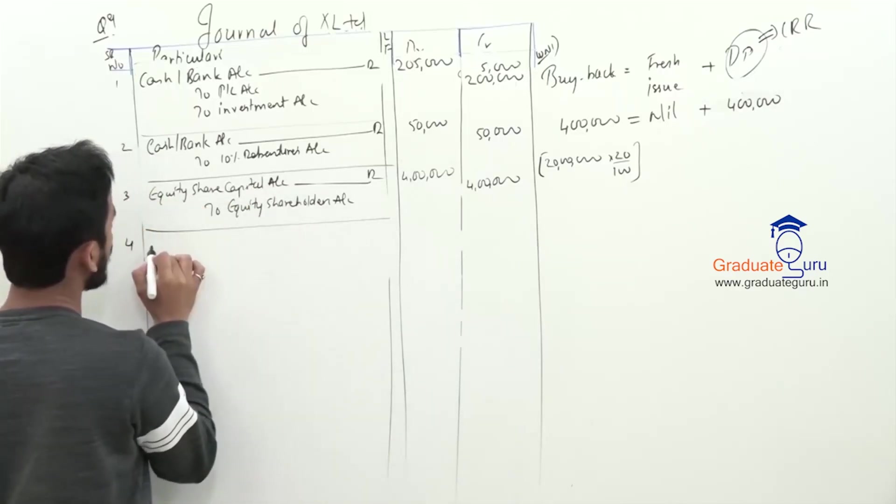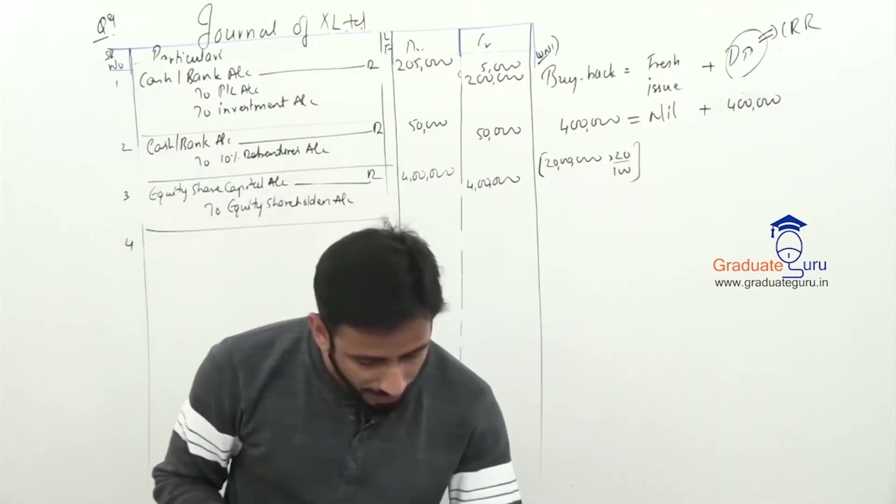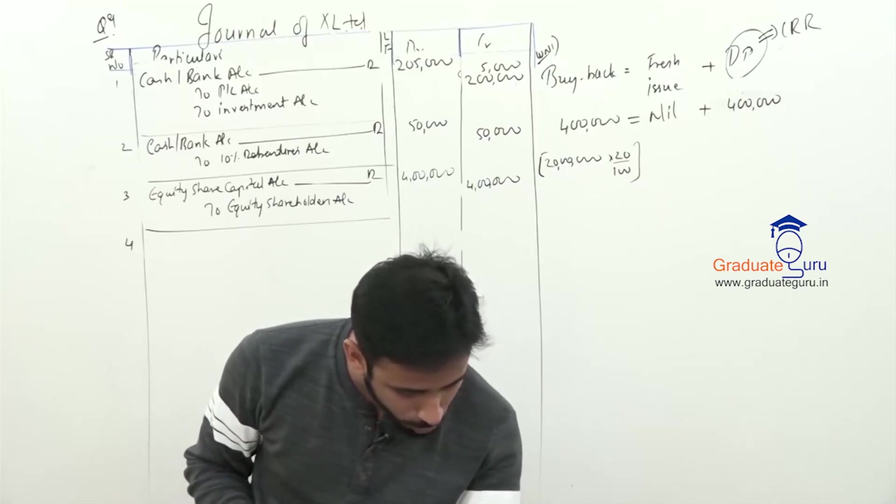Now, we will transfer it to DP. How much money? Are we having security premium? Yes, we do have 2,50,000.